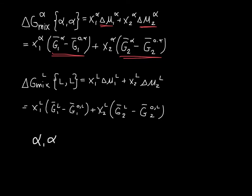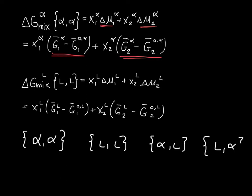We can make any choice of phase we want. If we have two phases — alpha and liquid — we could choose alpha-alpha, liquid-liquid, alpha-liquid, or liquid-alpha. As you change temperatures, you can change your choice: at temperatures where both components would be liquid, choose liquid-liquid; where both would be solid, choose alpha-alpha. But for any particular temperature, you have to stick with your choice in both equations.